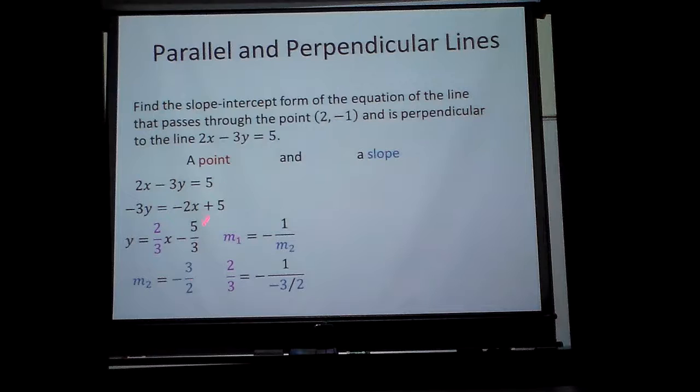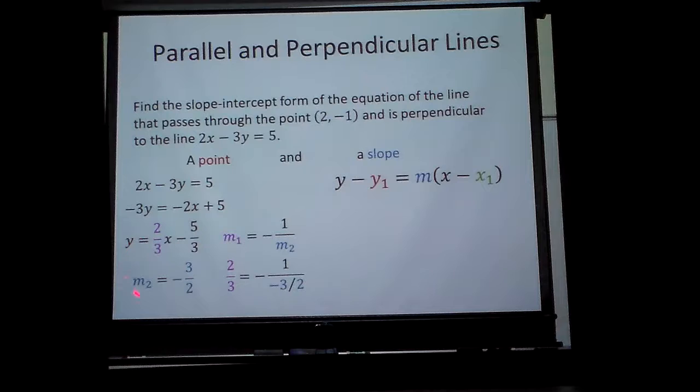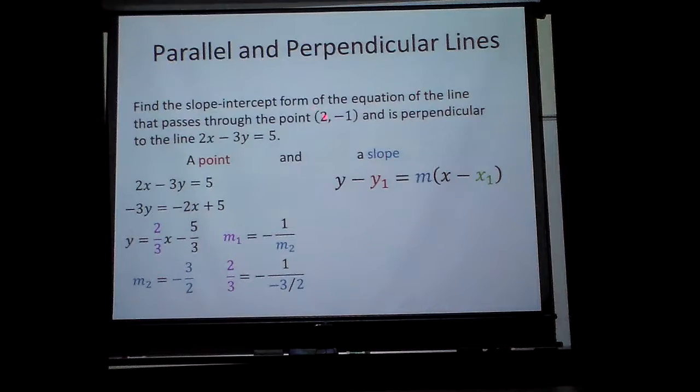Now I can go plug it in right here. Notice two thirds is the same thing as negative one over negative three over two, because when you divide fractions, you multiply by the reciprocal, which will make it a positive two thirds. So those reciprocals do work. Right? So I'm going to plug in. Now I'm going to plug in this m, because I want the perpendicular line to that equation. And I'm going to use that negative one right there and that x1 right there.